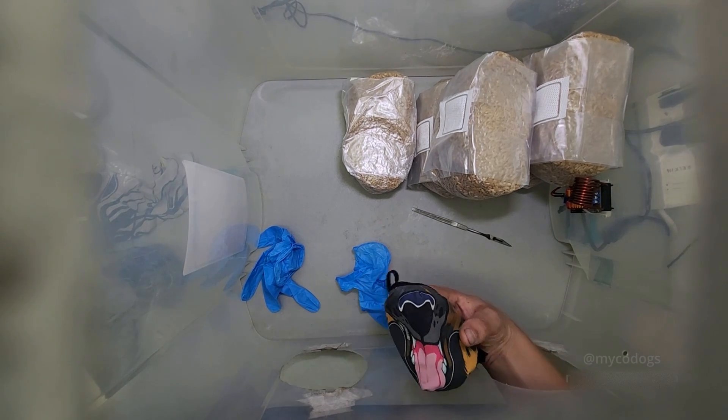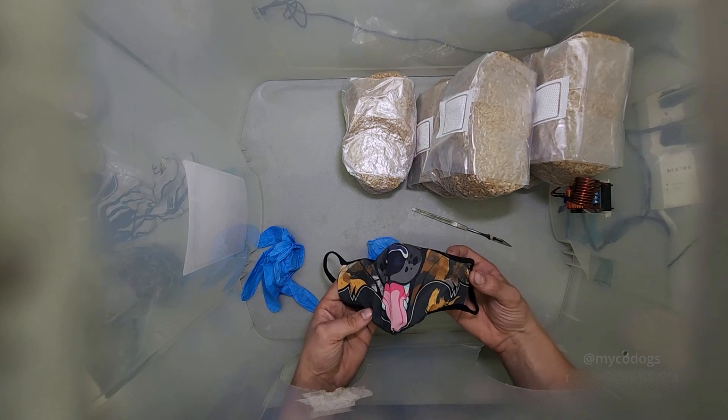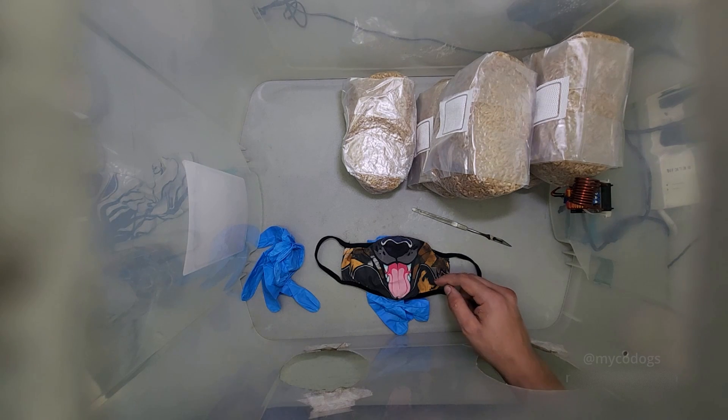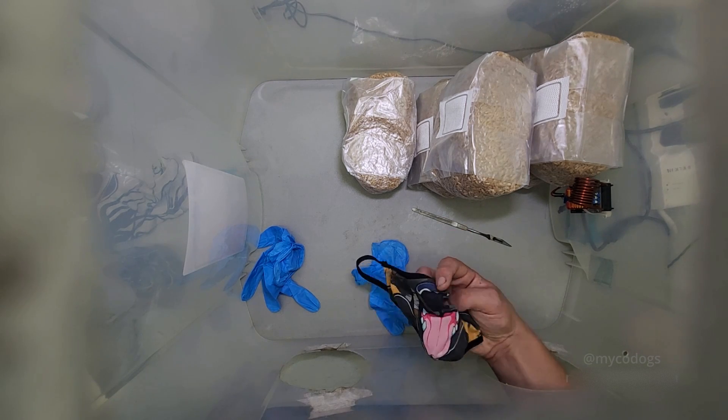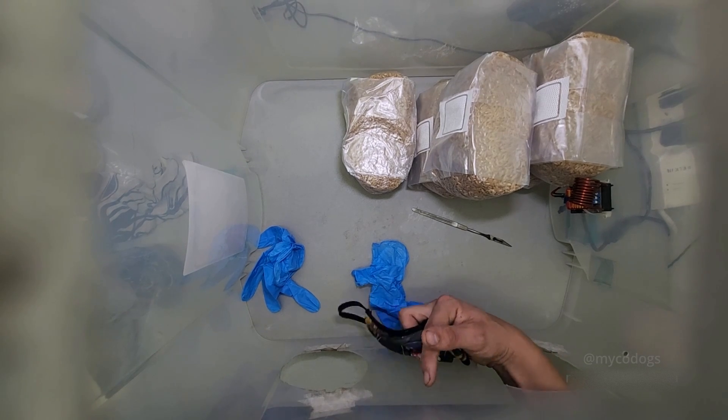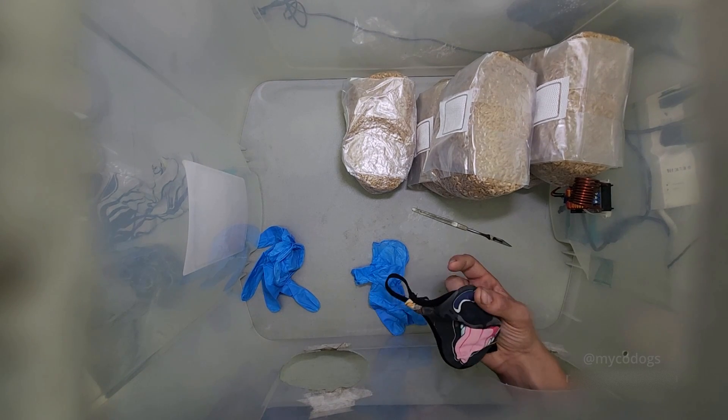Another good item to have while working in a still air box is a mask. This will help prevent you creating unnecessary air currents and it will also stop you from spitting bacteria all over your workspace. Although it's not completely necessary because there is a plastic barrier in front of your face.